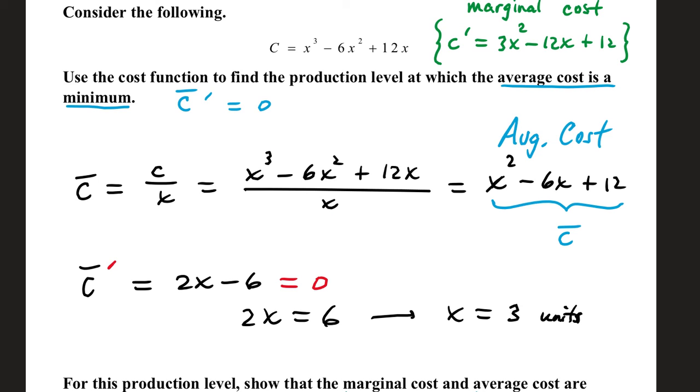x cubed divided by x is x squared. Negative 6x squared divided by x is negative 6x. And 12x divided by x is 12. This one in blue is our average cost function. Taking its derivative and finding the critical number, we'll have 2x minus 6. 2x minus 6 is equal to 0 when 2x equals 6, and that tells us x has to be 3.